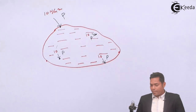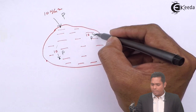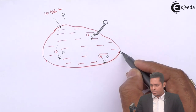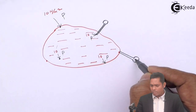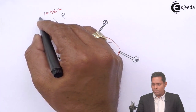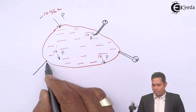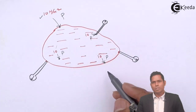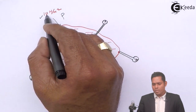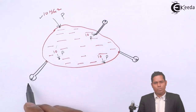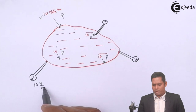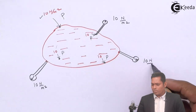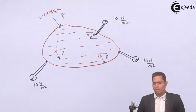If you want to know what the pressure is at any point, if you connect a pressure-measuring device at any point, all such devices will show a reading equal to the pressure that is being applied. That means if I apply 10 Newton per meter square here, the reading at every connected device will also be 10 Newton per meter square. The same pressure is developed at every point. This is Pascal's law.